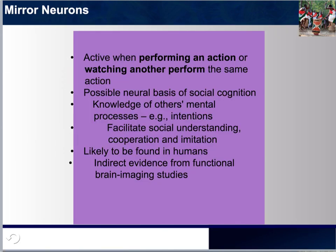Mirror neurons have been at the front of debates among different scientists. Some believe that mirror neurons definitely exist and are found in humans, while others say there is not enough evidence from functional brain imaging studies. Mirror neurons are basically active — as seen in monkeys and other species — when performing an action or watching another perform the same action. Think of watching an emotional movie: if the character is crying and going through pain, you may find yourself tearing up. It is believed this could be a response from mirror neurons.